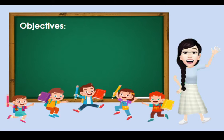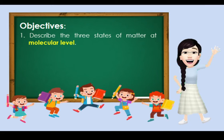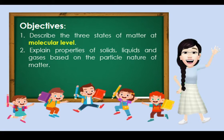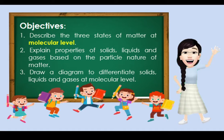We have the following specific objectives. At the end of this lesson, you are expected to, first, describe the three states of matter at molecular level. Second, explain properties of solids, liquids, and gases based on the particle nature of matter. And last, draw a diagram to differentiate solids, liquids, and gases at molecular level.